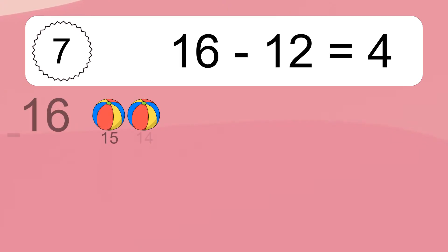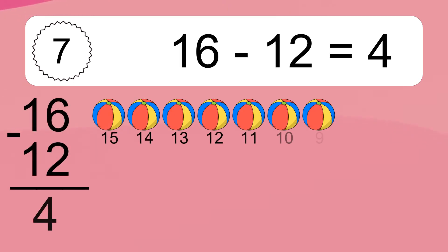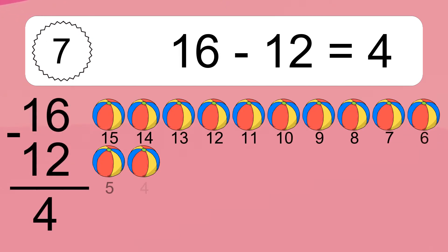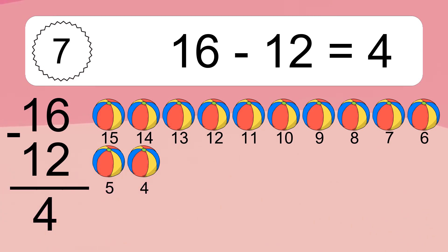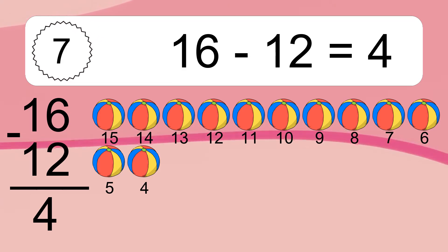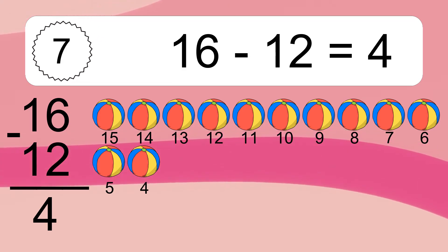16 minus 12 equals what? 16 minus 12 equals 4. Let's count it. 15, 14, 13, 12, 11, 10, 9, 8, 7, 6, 5, 4.